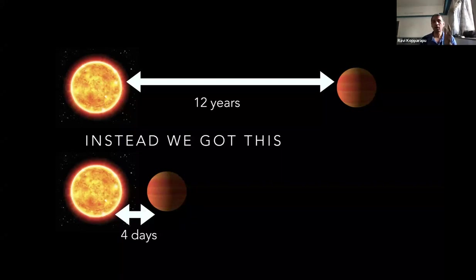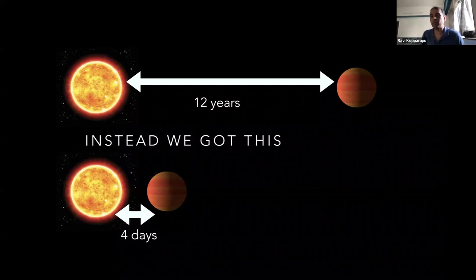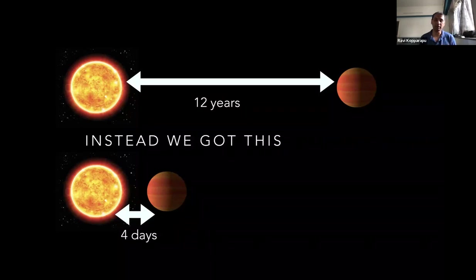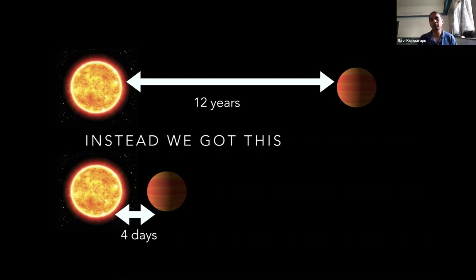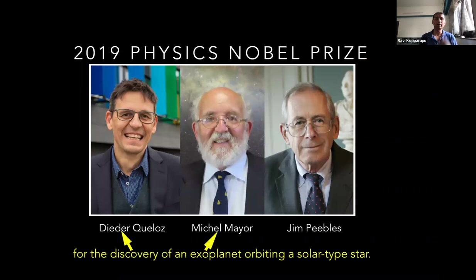The 51 Pegasi b orbit around its star is four days — less than a week. Imagine how much energy the planet would be receiving from the star. The universe does not care about our expectations — it gives what it gives. We were expecting a 12-year orbit, and we found a four-day orbit. Because of this discovery, the 2019 Physics Nobel Prize was awarded to Dieter Queloz and Michel Mayor for the discovery of the first exoplanet around a sun-like star.